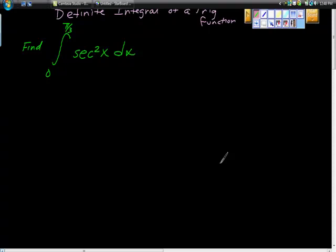This might be my favorite problem today because it looks so bad, but it's actually really easy to do. It says here, find the definite integral, find the area under the curve from zero to pi thirds of secant squared of x dx.